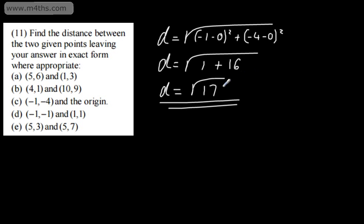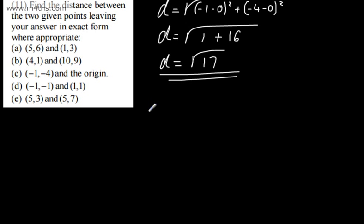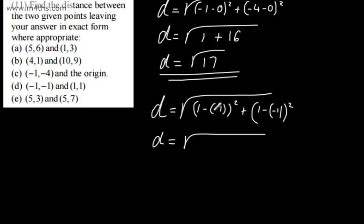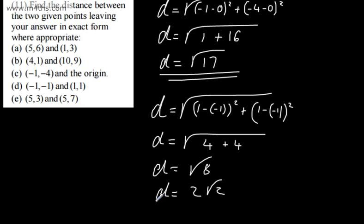We're not going to write a decimal approximation — we're asked for exact form, and root 17 is exact form. For the next one, the distance equals the square root of 1 subtract negative 1, squared, plus 1 minus negative 1, squared. Each bracket gives 2, so 2 squared is 4, plus 4 — that gives root 8, which simplifies to 2 root 2.